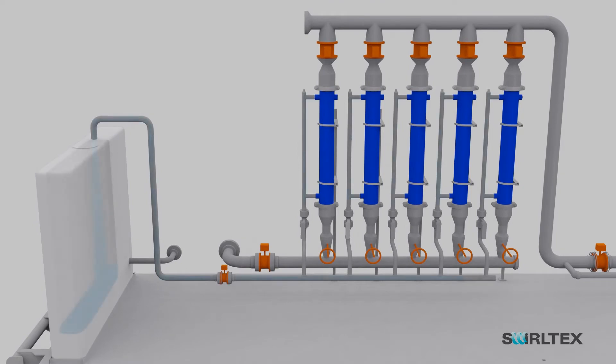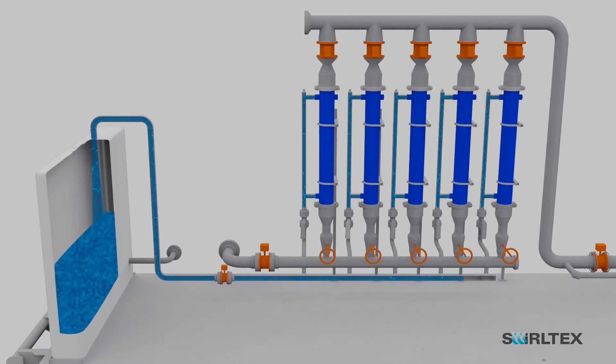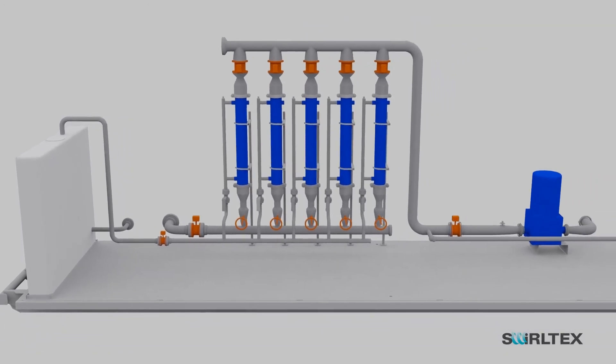Compared to a traditional membrane system, less pumping power is required to achieve the same permeate production. Therefore, Swirltex produces treated water in a much more efficient way.